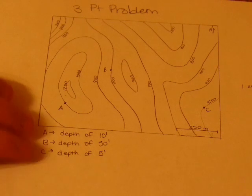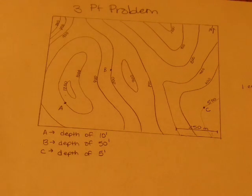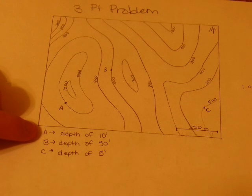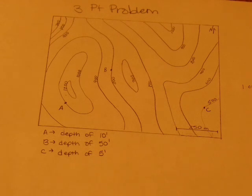So the difference between the one that you're going to get assigned and the ones you might see on the internet is the one that you've been assigned actually says that you're drilling down to the depths to find A, B, and C. So here A is at a depth of 10 feet, B is at a depth of 50 feet, and C is at a depth of 5 feet.